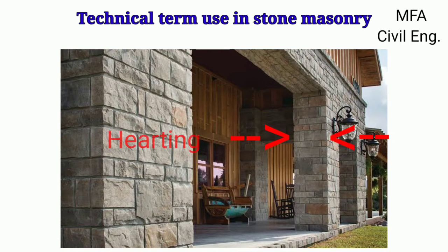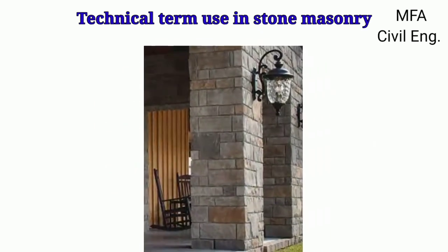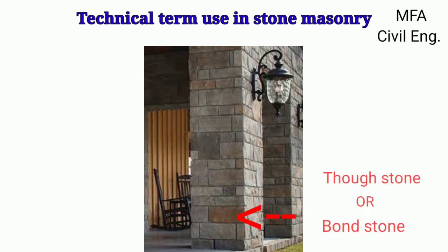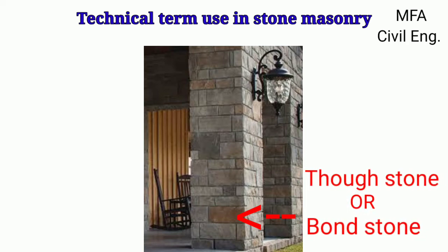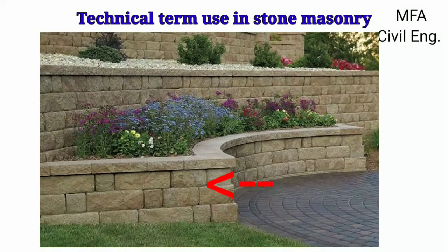The interior portion of a wall between the facing and the backing is called the hearting. In stone masonry, some stones in one piece or in two pieces at regular intervals are placed right across the wall. Such stones are termed as through stones or bond stones. These stones increase the bonding capacity between the facing and the backing.